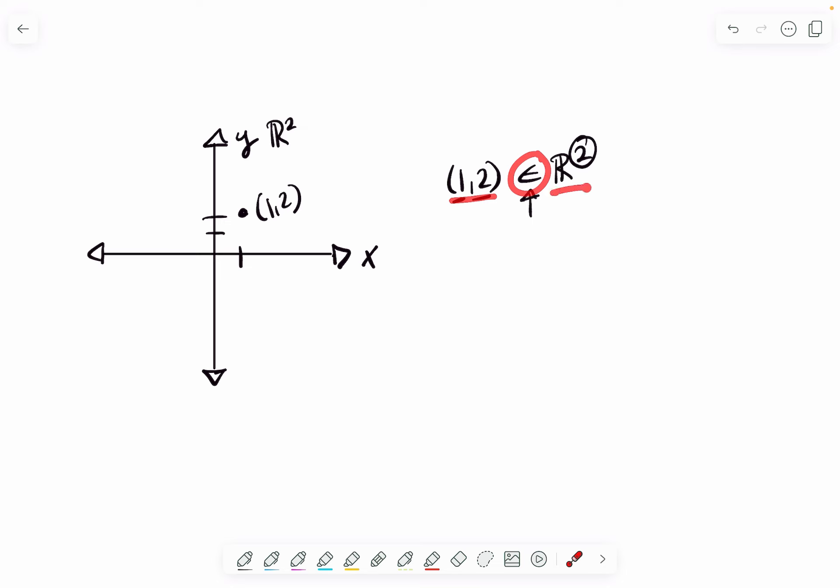So this point is an element of the second-dimensional space. That's just a fancy way of saying this point is part of the 2D world—you can plot it on a coordinate plane. That's what you know.